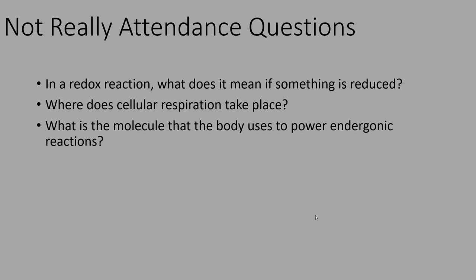In a redox reaction, what does it mean if something is reduced? In a redox reaction, we have oxidation and reduction. The reduction part is when something is having its charge become lower — its charge is being reduced. How do you lower the charge of something? You give it electrons. So gaining electrons is what reduced means — something is gaining electrons, which reduces its overall charge.